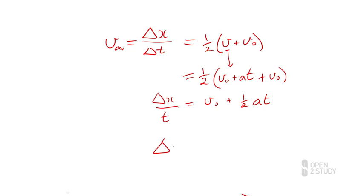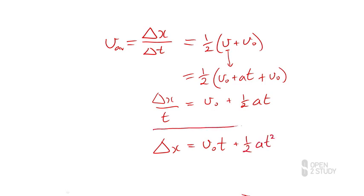My change in displacement I can write down as v₀t plus one-half at². And this, in fact, becomes my second equation of motion for constant acceleration. This one's useful because it tells me how my displacement changes with velocity, acceleration, and time.